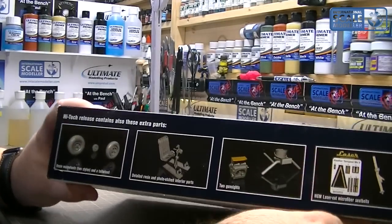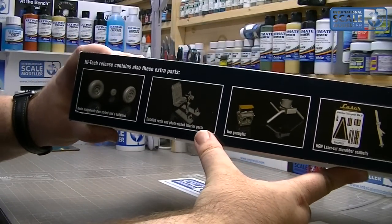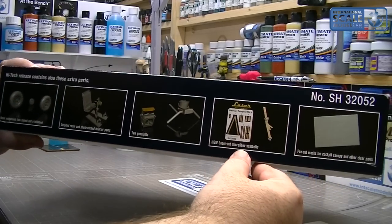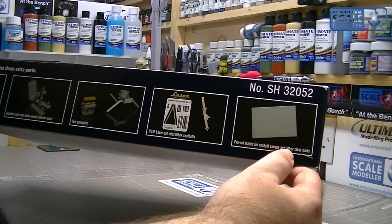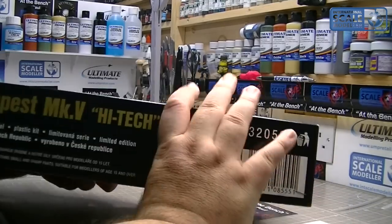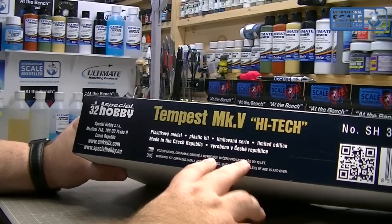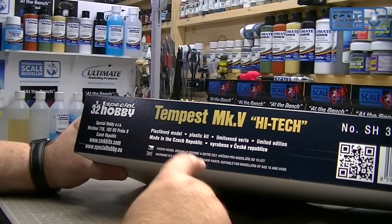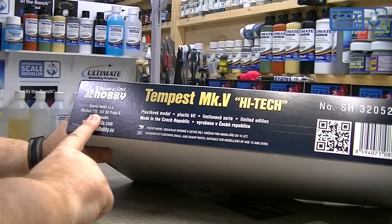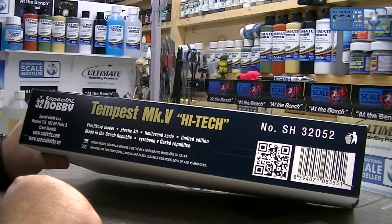On the side you get resin main wheels, detailed resin and photo-etch interior parts, two gun sights, laser cut HGW microfiber seat belts, pre-cut masks for canopy, cockpit and other clear parts. Czech Republic kit - CMK and Special Hobby, same company, different divisions. It's kit number 32052.